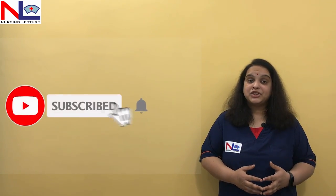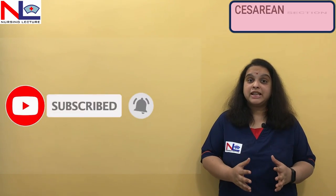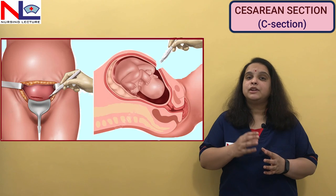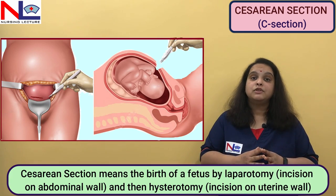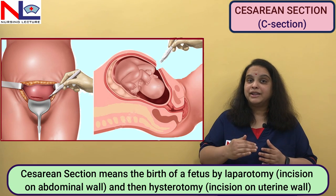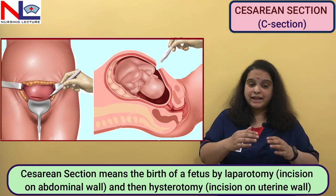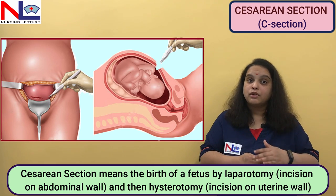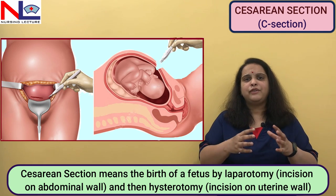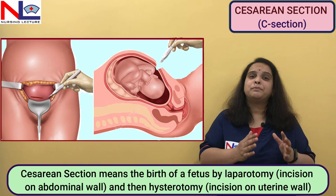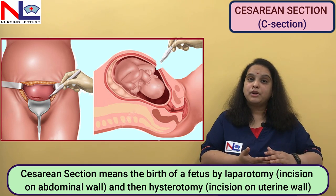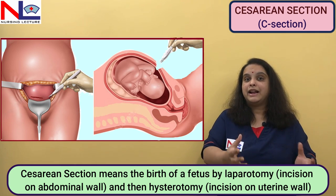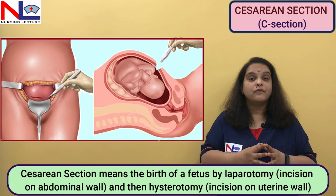Hello everyone, in this lecture I am going to talk about the C-section or the caesarean section. It is simply a surgical procedure where we firstly incise the abdominal wall by means of laparotomy and then encounter the uterus. We incise the uterus also, that is called hysterotomy, and finally we reach the fetus. This surgical procedure involves incising the abdominal wall and then the uterus by means of laparotomy and hysterotomy, and finally expelling out the fetus and the products of conceptus.